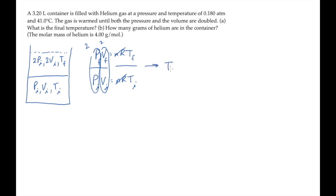That gives us the result that the final temperature is 4 times the initial temperature. This temperature needs to be in Kelvin, so we convert 41 Celsius into Kelvin.